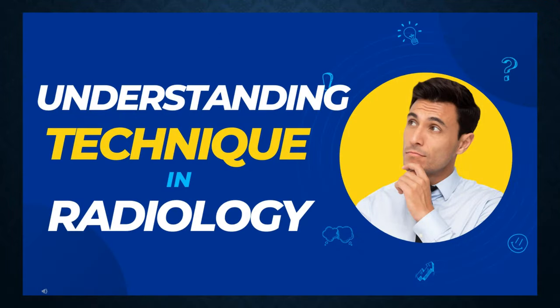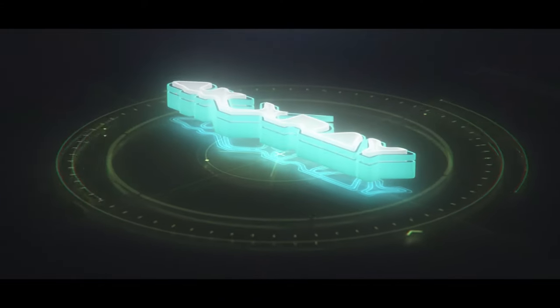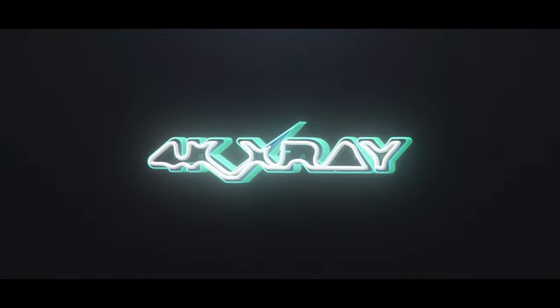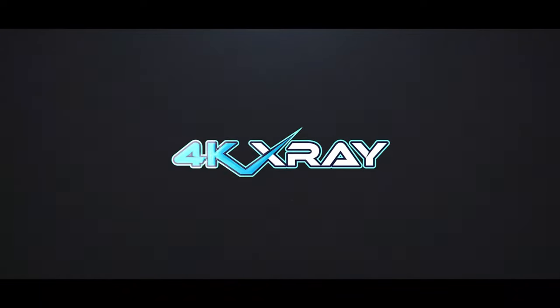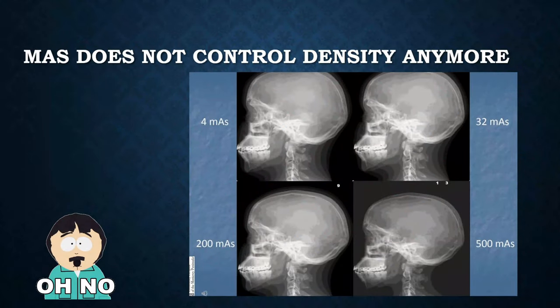Understanding technique in radiology. We need to realize that less than one percent of X-rays that come out of our tube when we set our technique make it to the IR. The rest will die out and get absorbed. Less than one percent of that technique is making our image. mAs no longer in the digital world controls density or brightness.